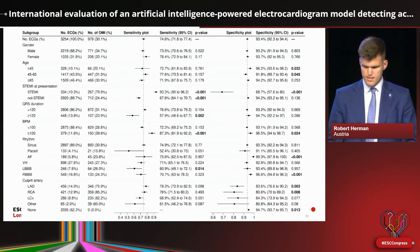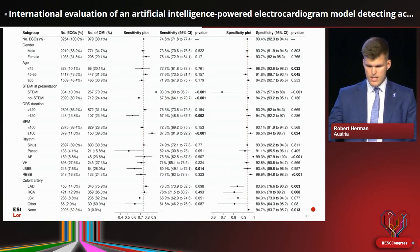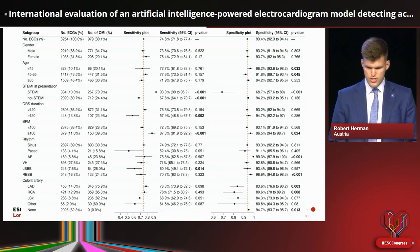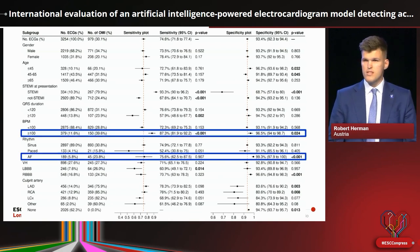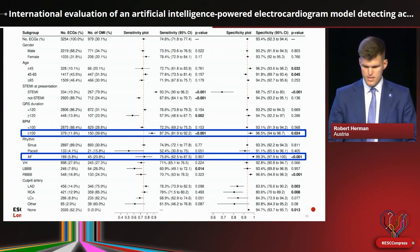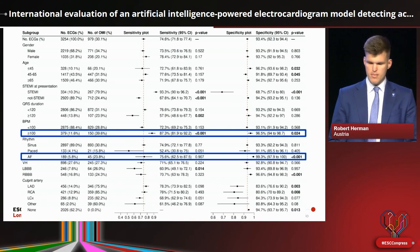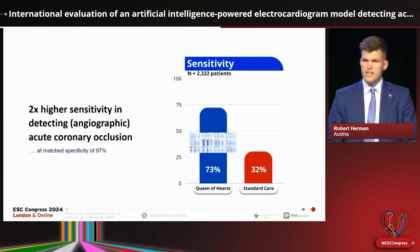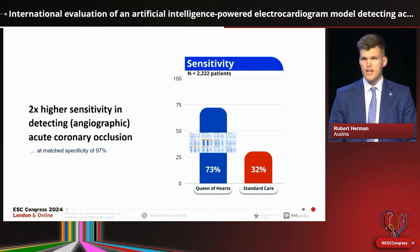We also performed subgroup analysis showing model performance across various demographic, electrocardiographic, and rhythm subgroups — including complex scenarios like tachycardia or atrial fibrillation — where the model had very high specificity. To summarize the performance simply: our model is able to increase the sensitivity of detecting acute coronary occlusion, regardless of ST elevation, by twofold compared to the standard of care at the same specificity.